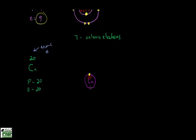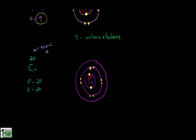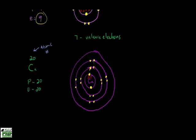The first shell holds a maximum of two, so we have 18 more to go. We draw another shell and put a maximum of eight on it — two plus eight gives us ten, so we need ten more. We draw another shell and put eight on it — now we have 18. We need two more, so we draw one final shell with two electrons. That gives us 20 total. The outermost shell has two electrons, so calcium has two valence electrons.